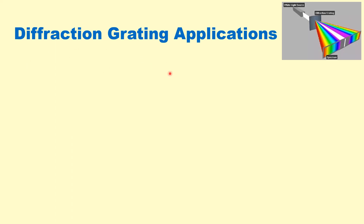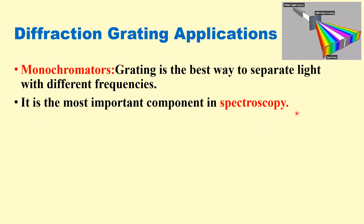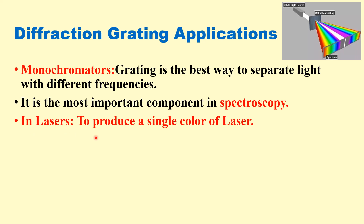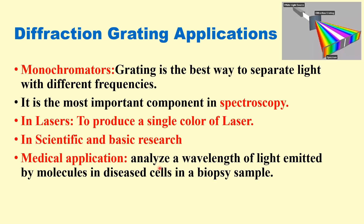What are the applications of diffraction grating? Gratings can be used as monochromators — they are the best way to separate light of different frequencies. They are the most important component in spectroscopy for studying different spectra. In lasers, gratings are used to produce a single color of laser light. They are also important in scientific research and have medical applications, such as analyzing the wavelength of light emitted by damaged molecules in a biopsy sample.